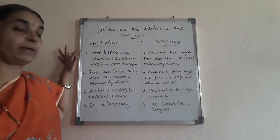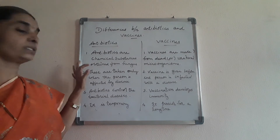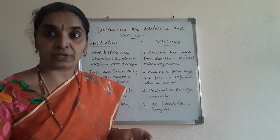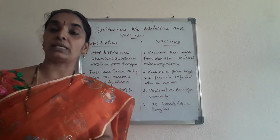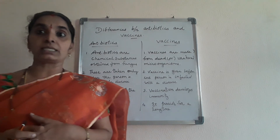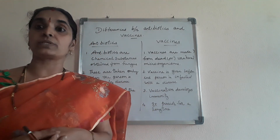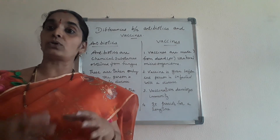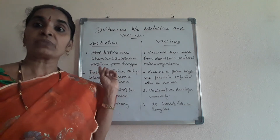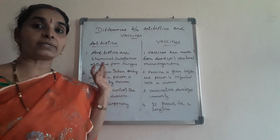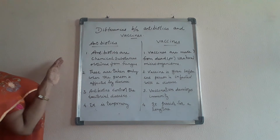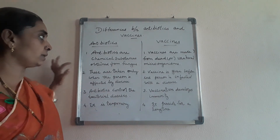Antibiotics are chemical substances obtained from fungi. Alexander Fleming was working with bacterial colonies when a fungus developed and killed them. When he applied it to other disease-causing bacteria, it also killed those bacteria. The first antibiotic was developed by Alexander Fleming from fungus — it is penicillin.